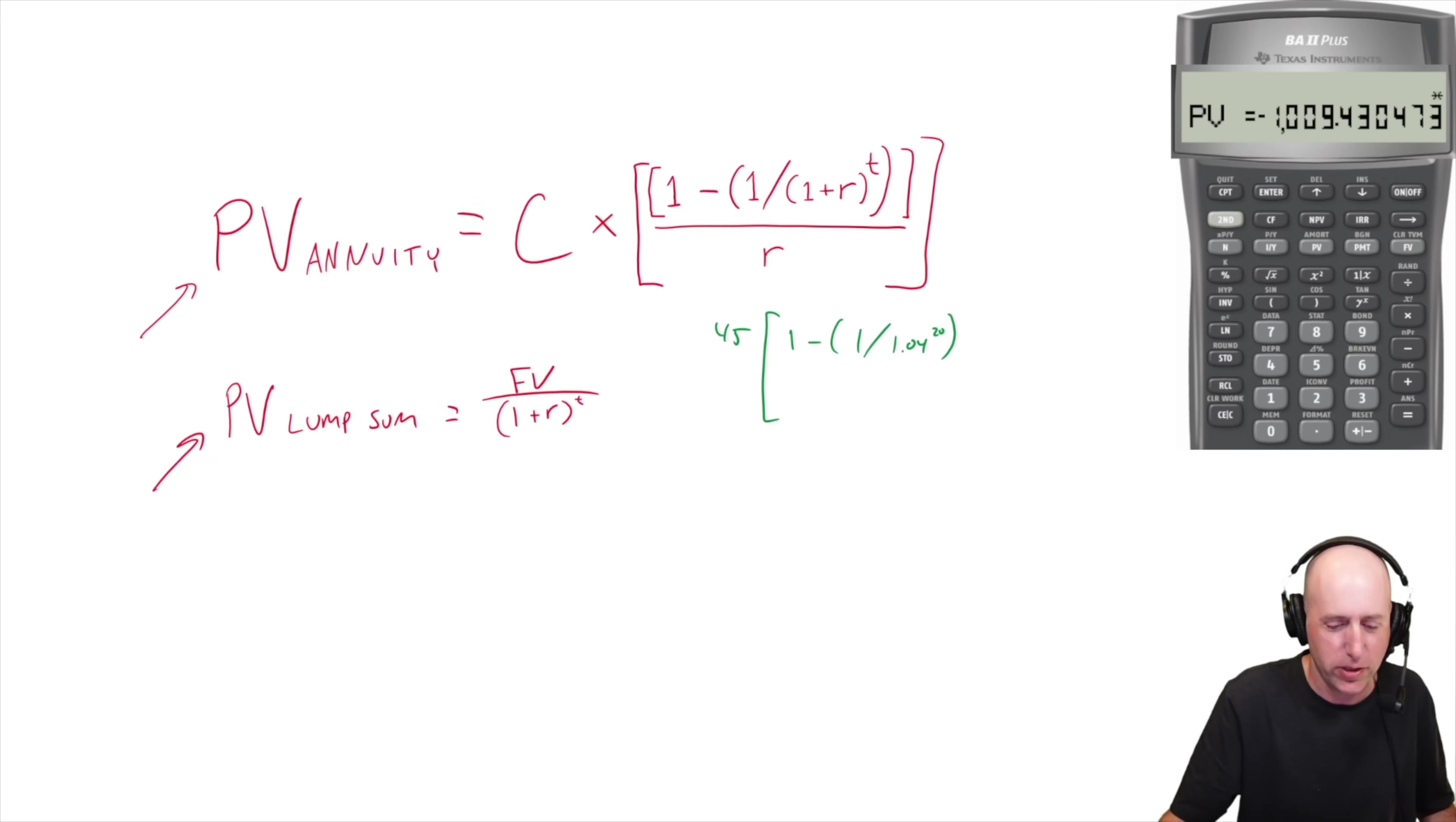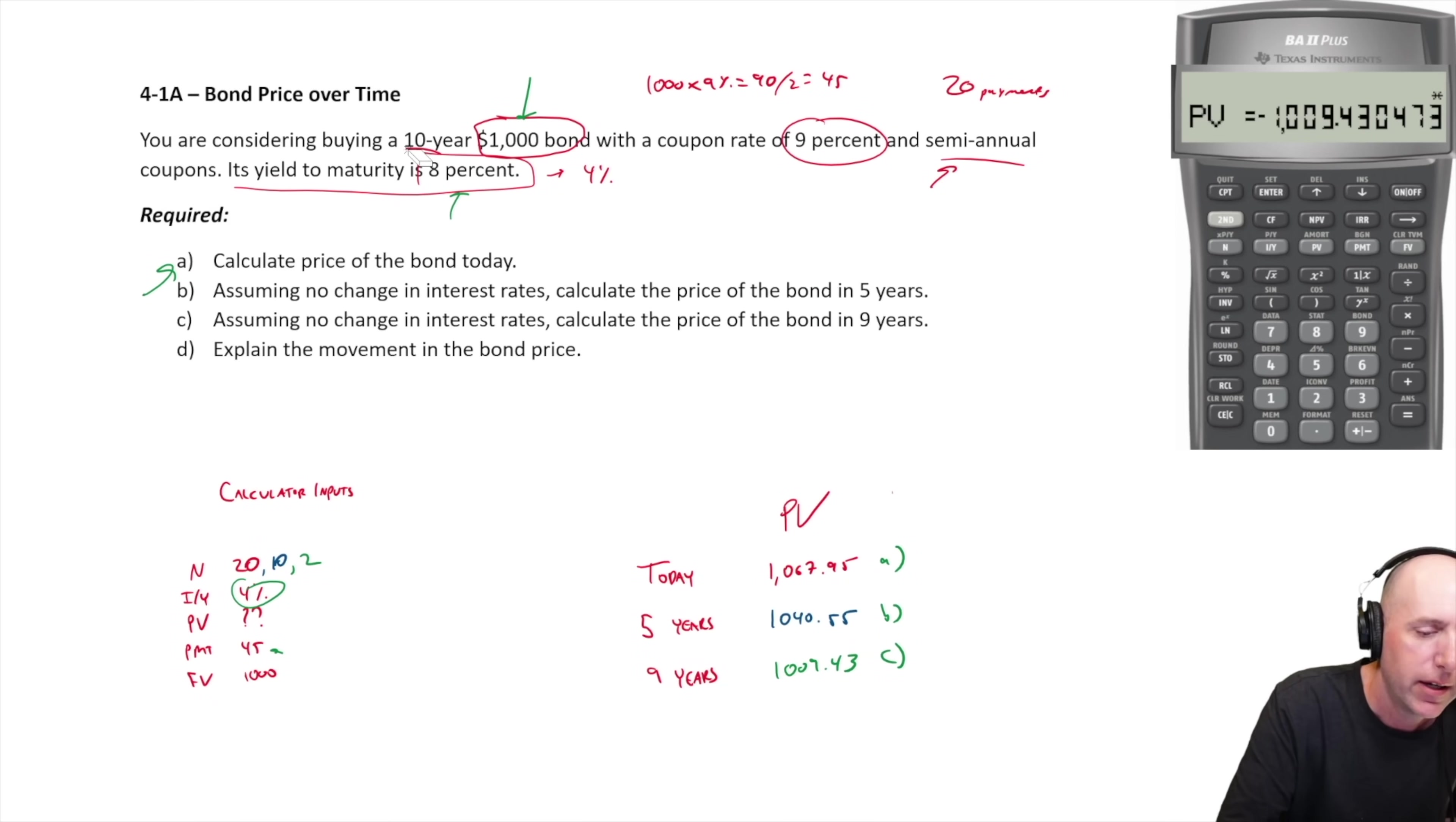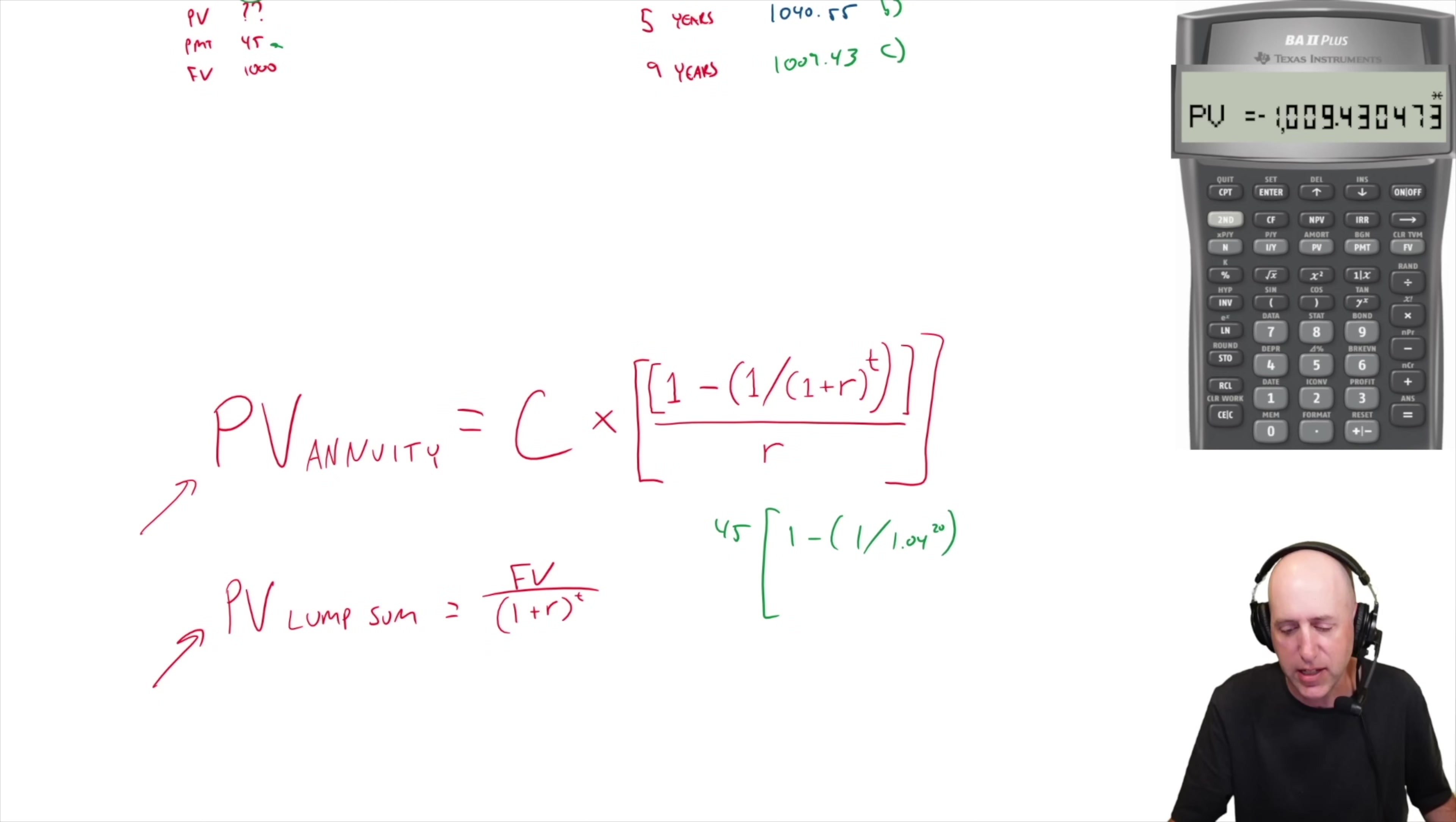We were just coming up with our time period. And what we'd said was, we're doing part A, and so for part A this is a 10 year bond, 20 payments. So our T is 20. We divide that by R, which is 0.04.